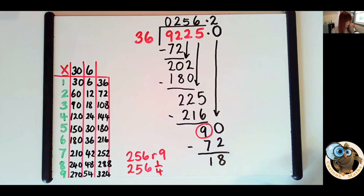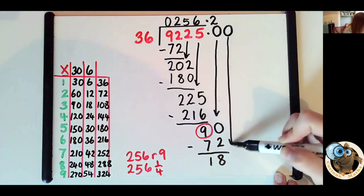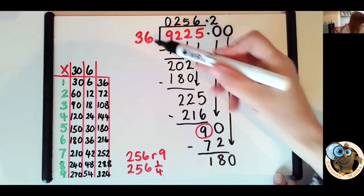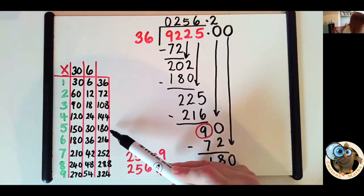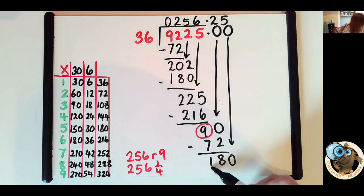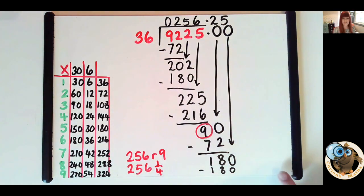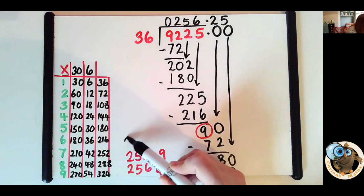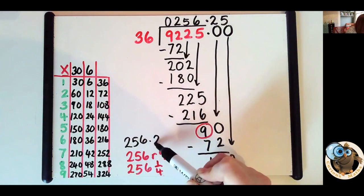So now we've got 18 remaining. Let's try another zero. Let's see if we can get our decimal represented in its most simple form. Let's bring that down. How many 36s in 180? And look, there are 5 36s in 180. I put it there, I subtract it, and I get left with zero. So I know I cannot go any further. So the same answer represented as a decimal is 256.25.